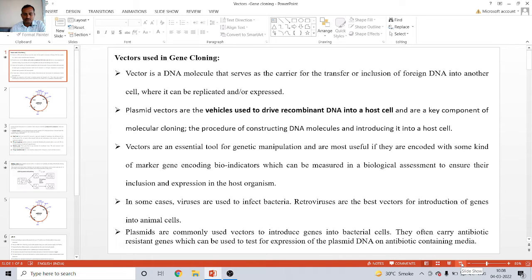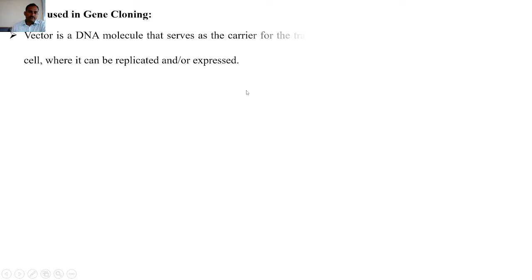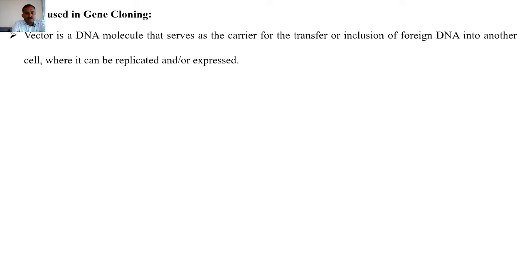Good morning. In this lecture we are going to study about vectors used in gene cloning. First of all, what are the different types of vectors which are used in gene cloning? A vector is a DNA molecule which serves as a carrier for the transfer or inclusion of foreign DNA. The role of that vector is to transfer the gene of interest or enable the inclusion of foreign DNA.